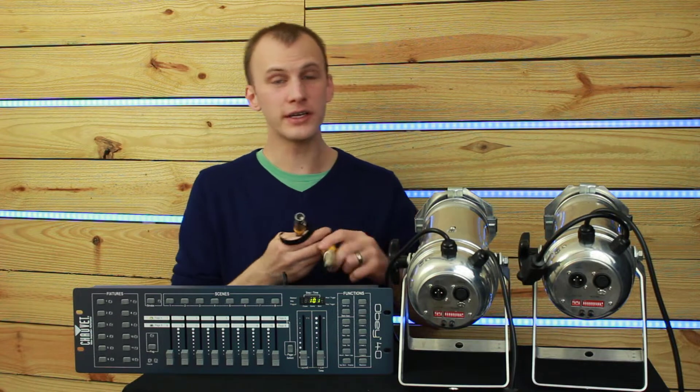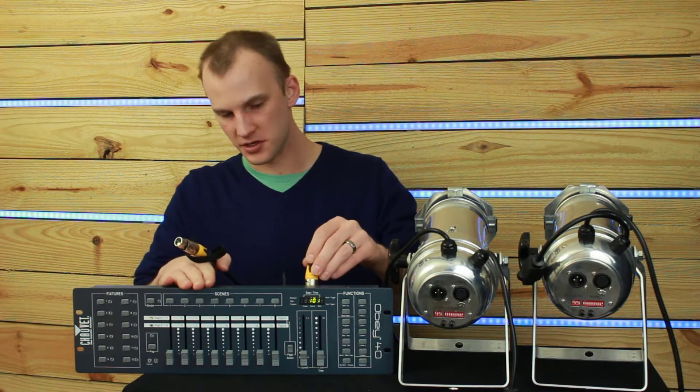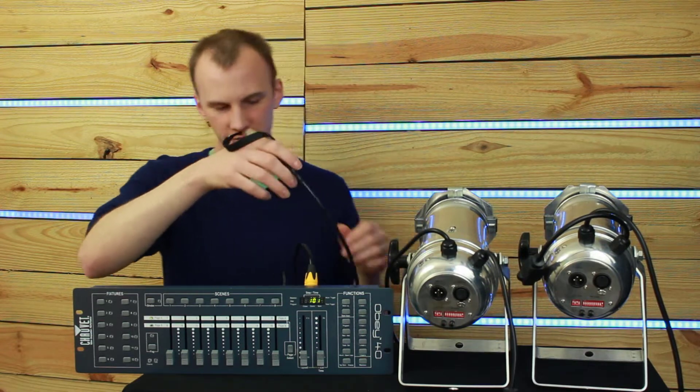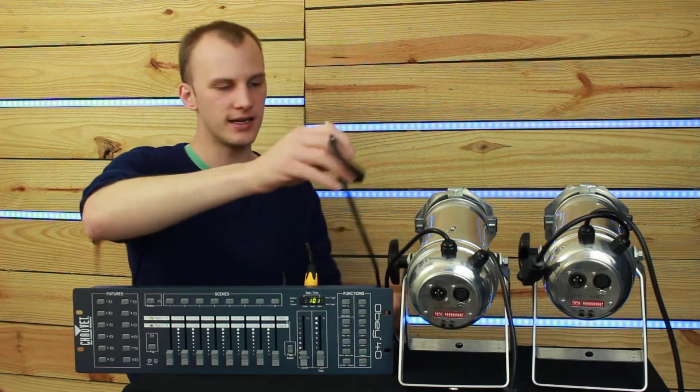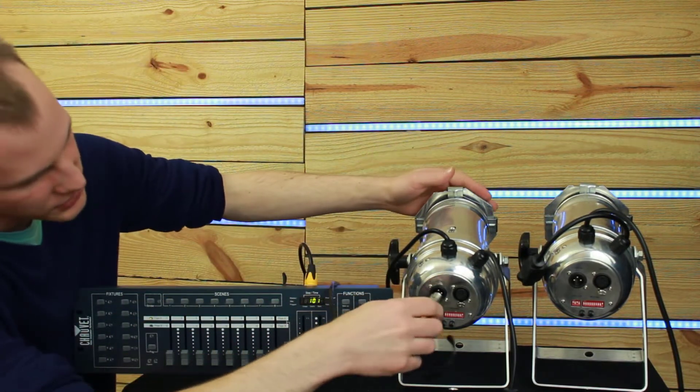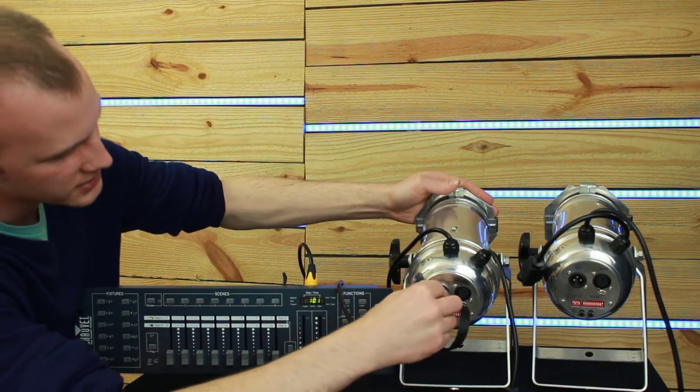3-pin and 5-pin are interchangeable. You can convert with just a simple adapter. They run the same data format between them. So, I've got my first 3-pin cable plugged in here to the console, DMX output. We'll just plug that into the first light, DMX input.